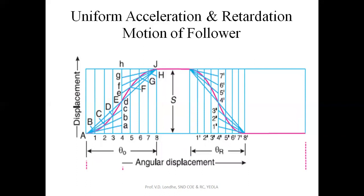The next motion is uniform acceleration and retardation motion of the follower. The cam rotation is divided into angle of rise, dwell, and angle of return, and here acceleration equals retardation. We divide the rise part and return part into six or eight equal parts. Since acceleration and retardation are equal, the midline for both the angle of rise and the angle of return is also divided into six or eight equal parts.